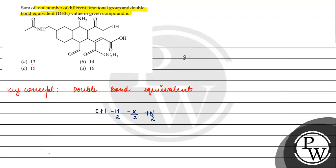Functional groups are basically those groups of atoms which, when attached to a carbon chain, give the molecule a specific type of property. So, 8 functional groups plus 8 DBE is equal to 16. The correct option is Option D. I hope you understood it well. Thank you, all the best.